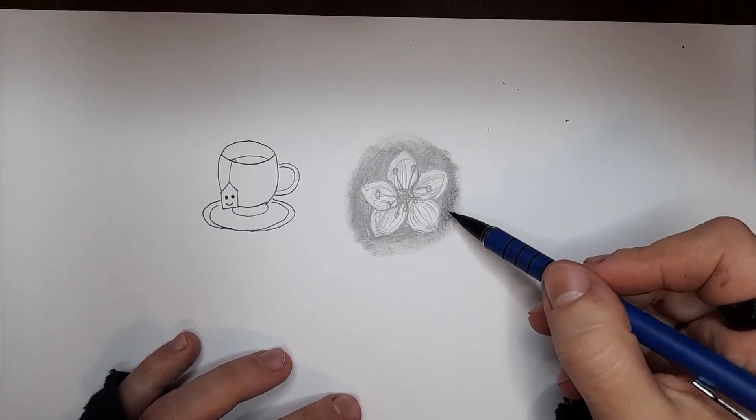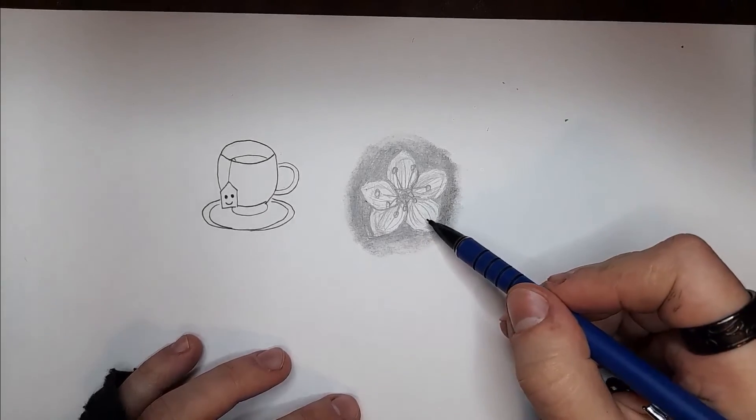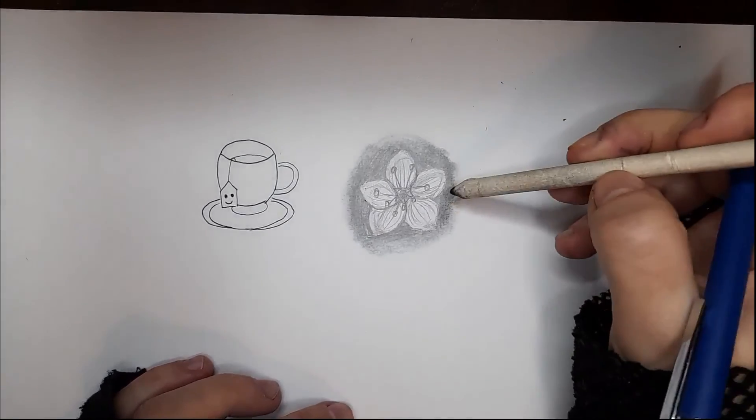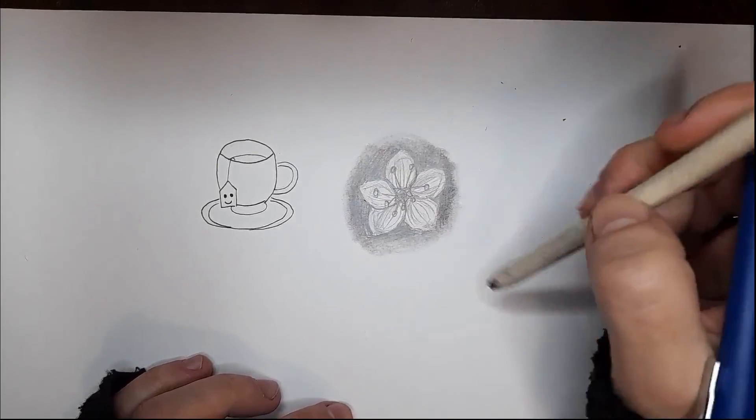As you can see, a dark background makes the figure pop. You can also blend it so it looks more smooth and faded.